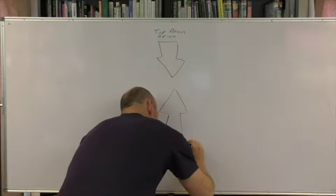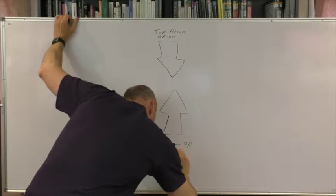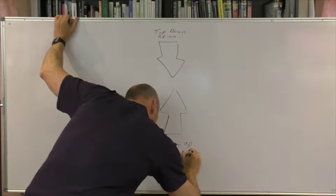And through the bottom-up approach, we can just use an affinity map or affinity analysis.